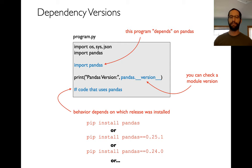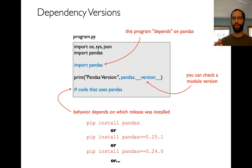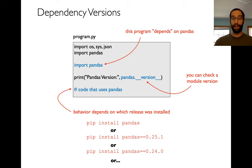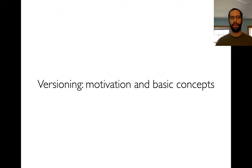By specifying a version number, you can get different versions of the software. One thing you might want to do, if you're starting a new project and want your code to have a long lifespan, is figure out the most recent version of the package, write your code for that version, and tell anybody who wants to use your code that they still have to use that version — even if newer versions are available, since those might not be compatible. Versioning is really important to reproducibility.